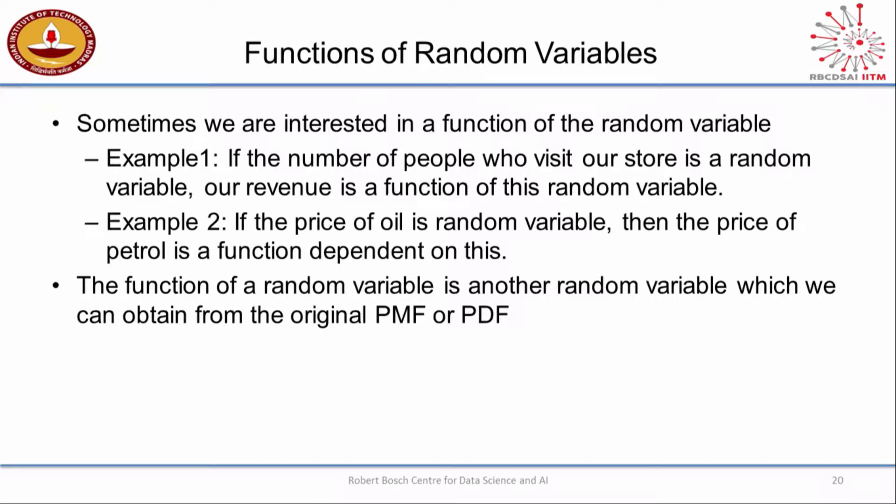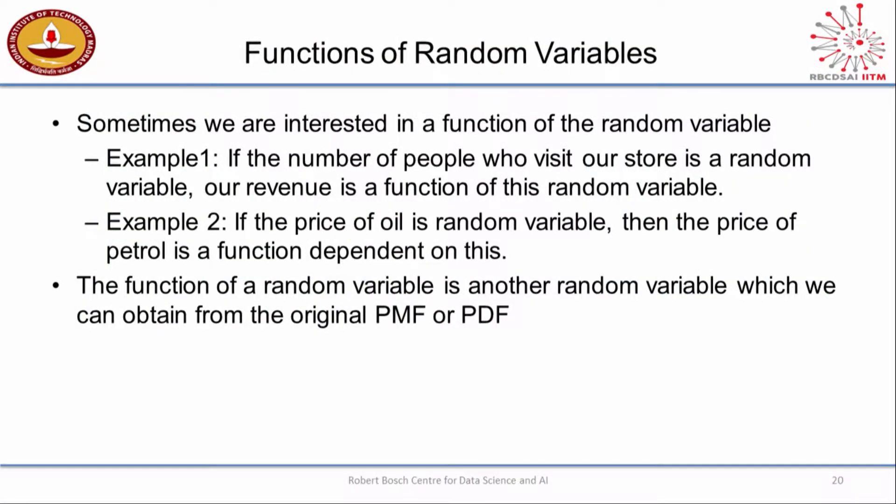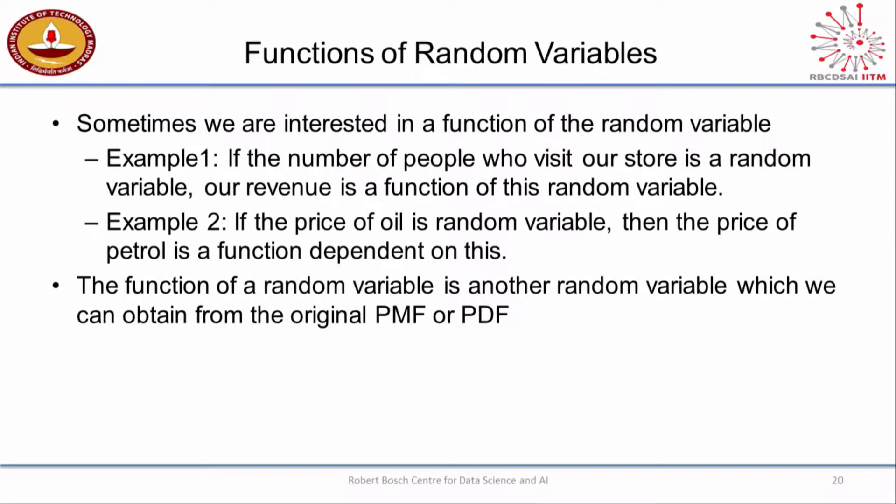In the real world, sometimes you're not just happy characterizing the original random variable. For example: if the number of people who visit a store is a random variable, your revenue might be a function of the number of people who visit - more people, more revenue; fewer people, less revenue. Now suppose you're interested in the random variable called revenue. You can characterize it from the original distribution. You need f(x), the original random variable, and you need the mapping between x and this new random variable. These two together should allow you to characterize the new random variable.